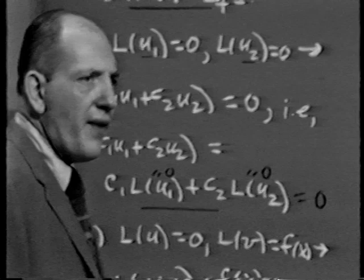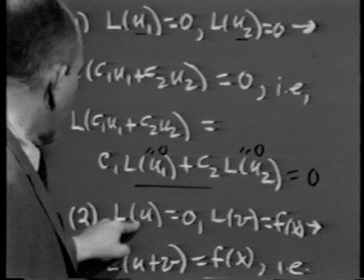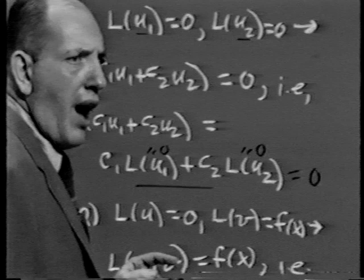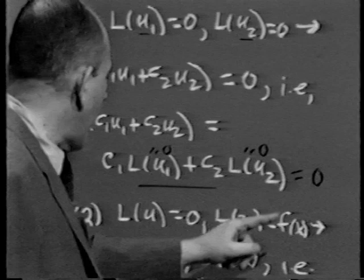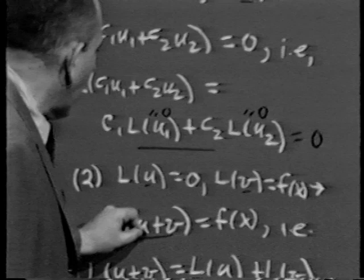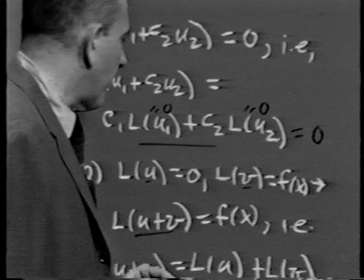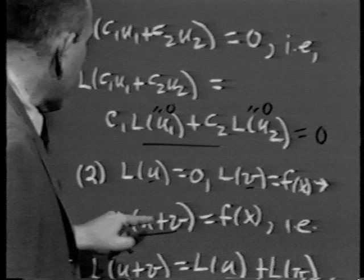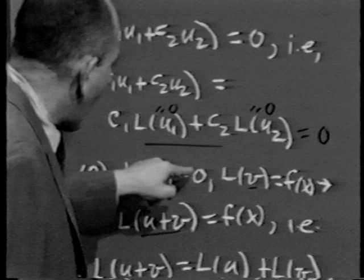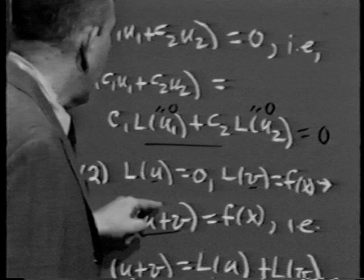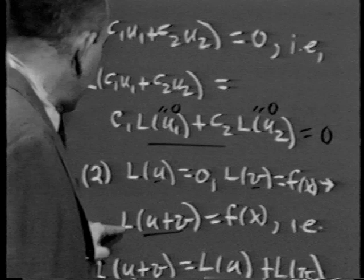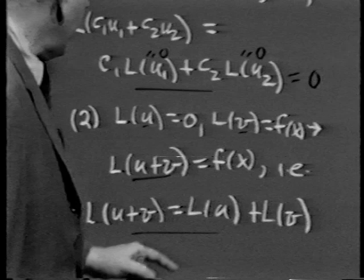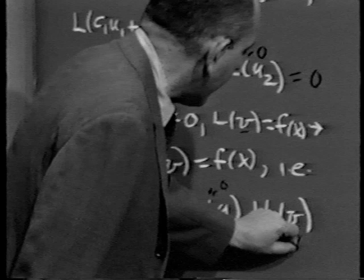A second important factor: if L of u equals 0 and L of v equals f of x, then L of u plus v also equals f of x. The proof: by linearity, L of u plus v equals L of u plus L of v. We're given L of u is 0 and L of v is f of x, so 0 plus f of x equals f of x. Whenever I add a solution of the homogeneous equation to a particular solution, I again get a solution of the full equation.